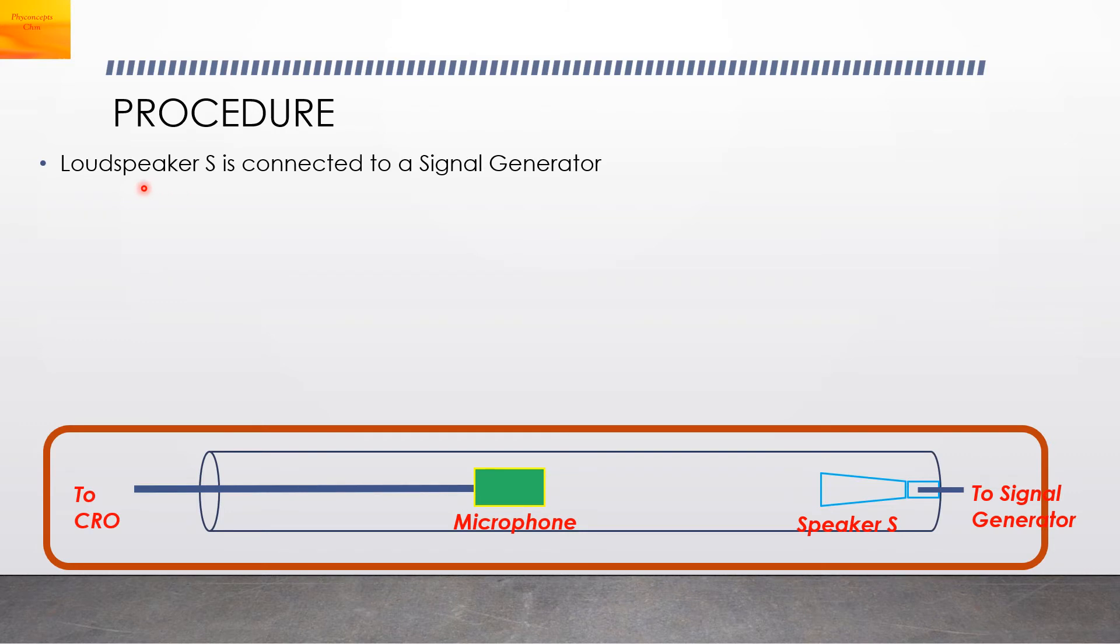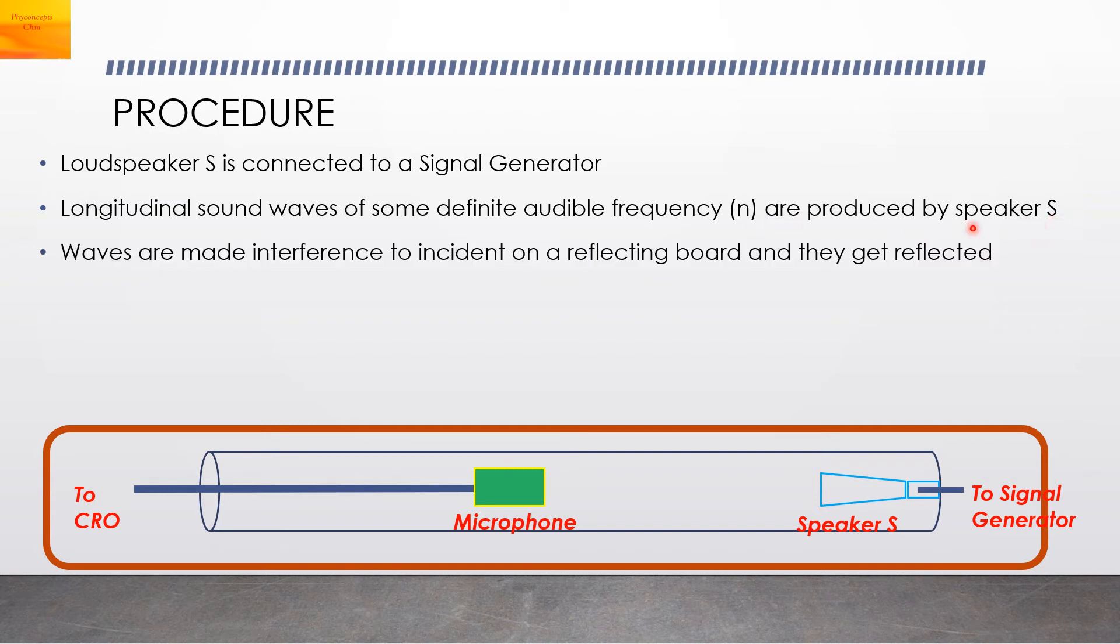Procedure: The loudspeaker S is connected to a signal generator. Longitudinal sound waves having a frequency which we denote as N are produced by the speaker S. Waves are made to incident on a reflecting board and they get reflected. Incident and reflected waves are produced.